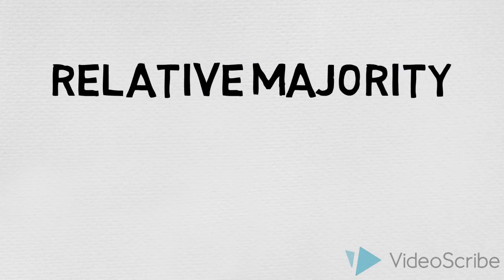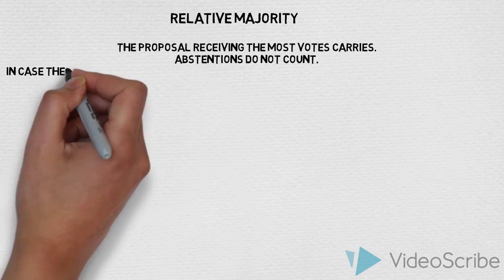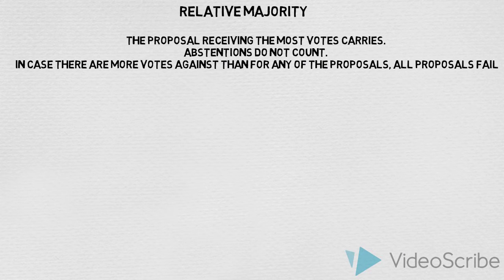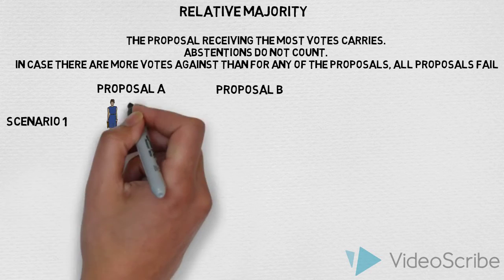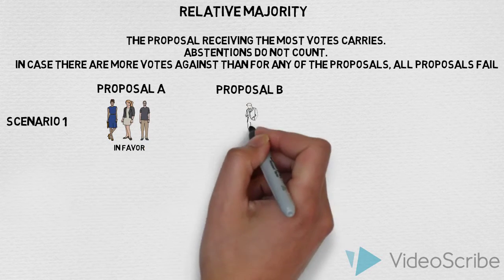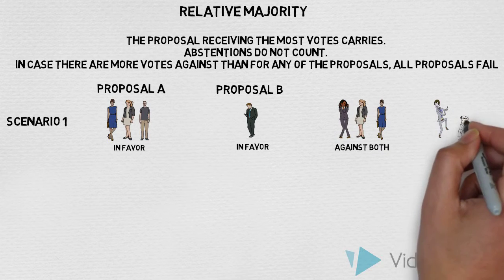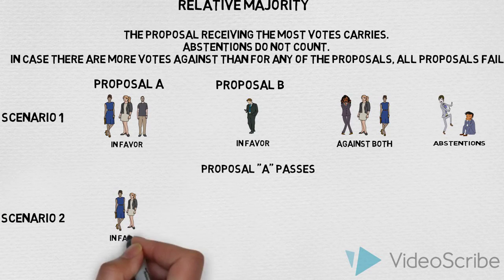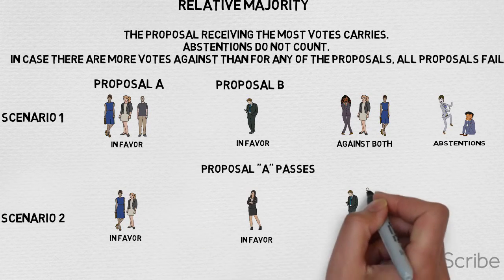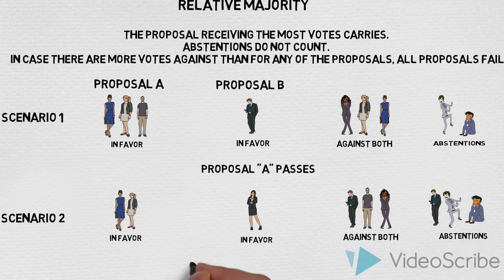Relative majority: the proposal receiving the most votes carries, and abstentions do not count. In case there are more votes against than for any of the proposals, all proposals fail. In scenario one, proposal A gets three votes and proposal B gets one; against both are three, with two abstentions — so proposal A passes. In scenario two, proposal A gets two, proposal B gets one, three against both, and three abstentions — so both proposals fail.